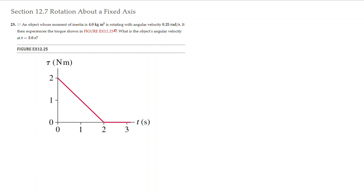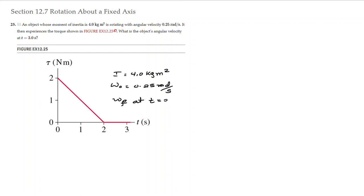We need to find the angular velocity of the object after 3 seconds, once the torque was applied. We know the moment of inertia of the body, which is 4.0 kg·m², and we know the initial angular velocity, which is 0.25 radians per second. We want to find the final angular velocity — specifically, the angular velocity at t equals 3 seconds.